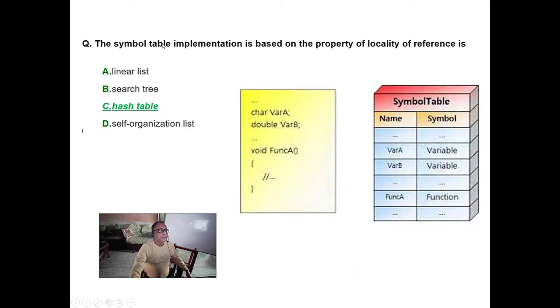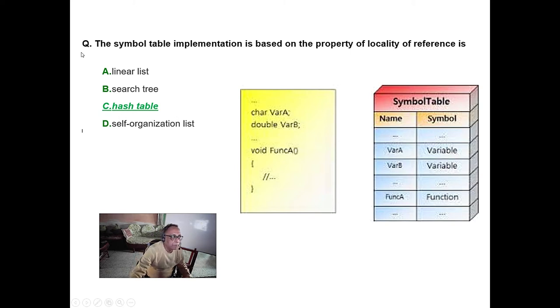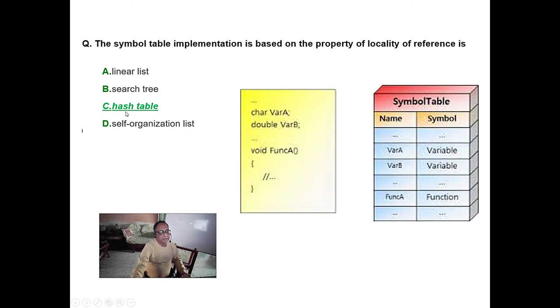The symbol table implemented based on the property of locality of reference — I have said it has to be a hash table. A linear list can be done but it will be pretty slow; a search tree is also slow. Hash table is actually the answer.